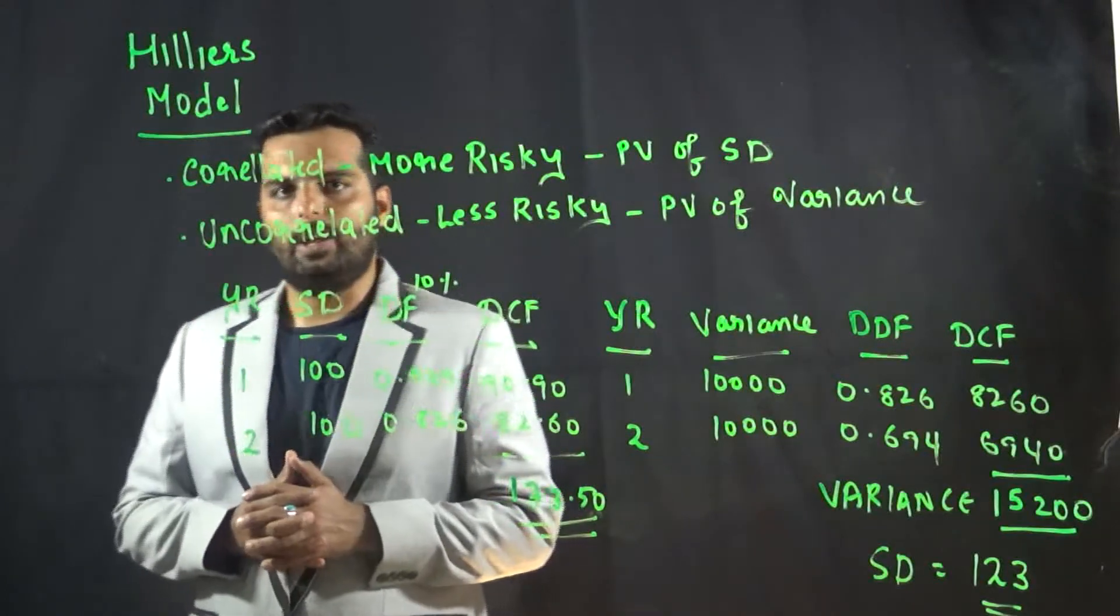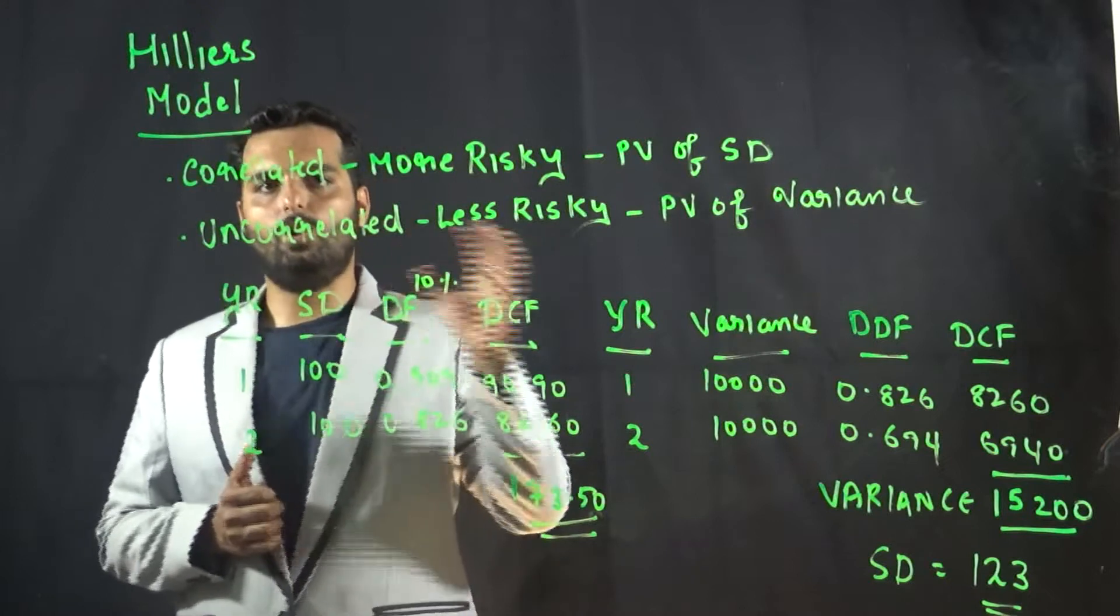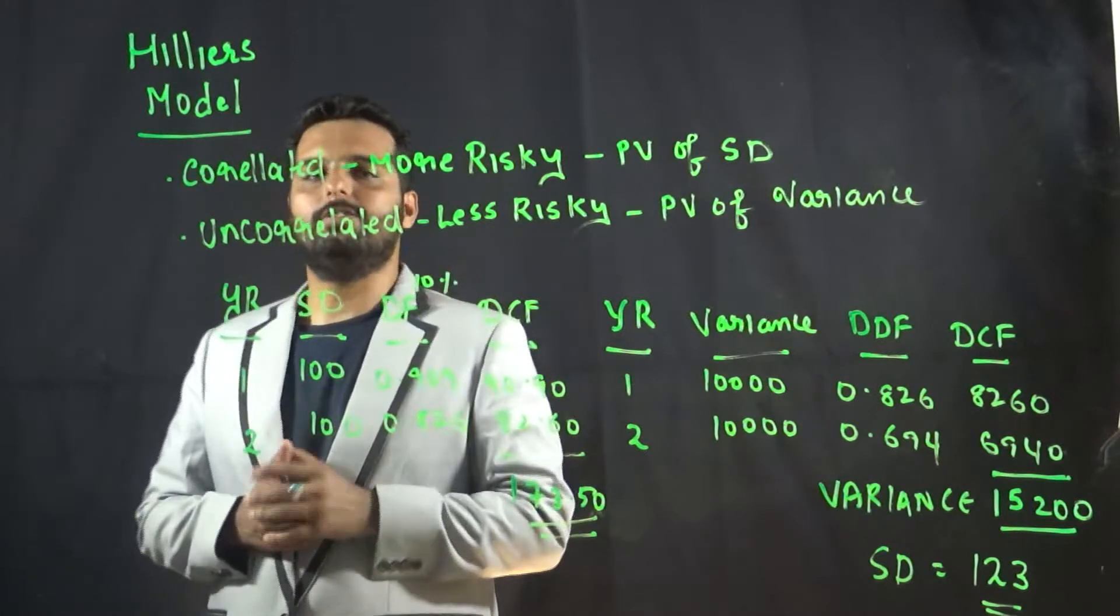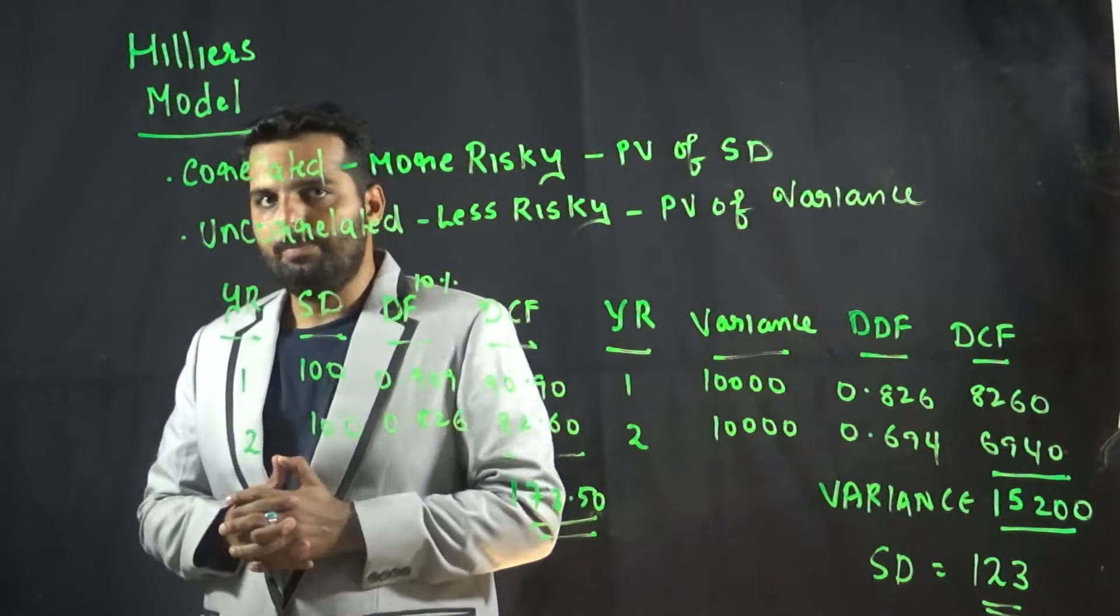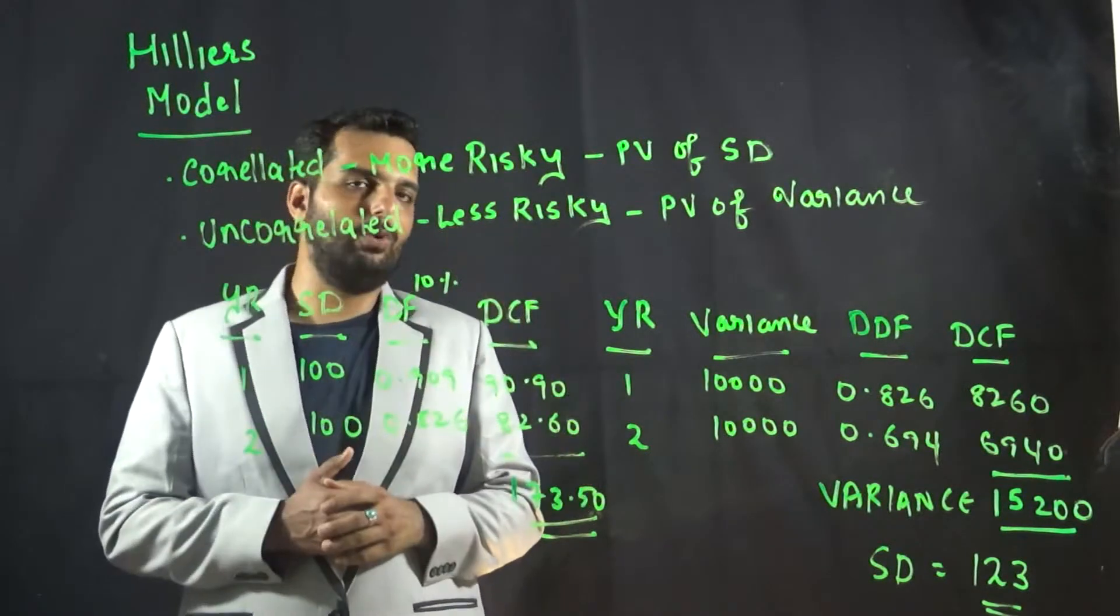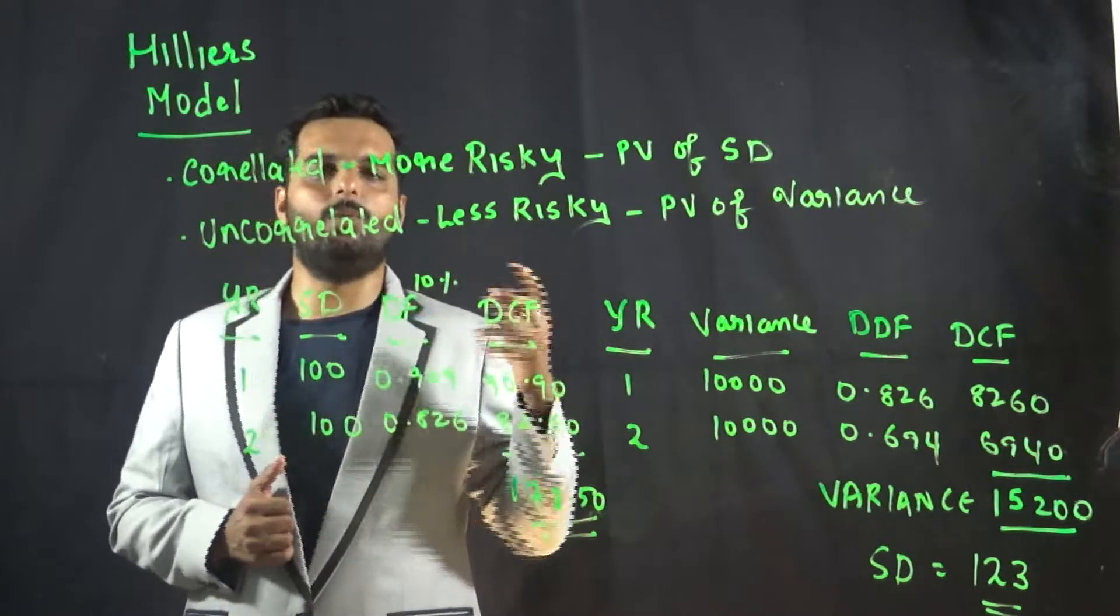Hello everyone, this is Tarun Jagdish. I will be talking about the logic of Hillier's model. As per Hillier's model, there are two types of cash flows: one is the correlated cash flow and the second one is the uncorrelated cash flow.